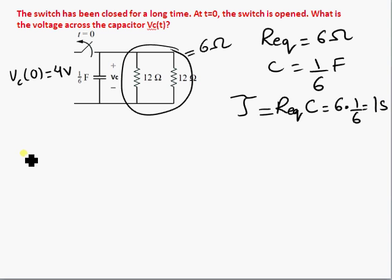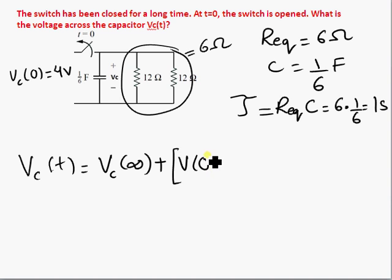Now using the voltage across the capacitor expression, we have the voltage of the capacitor at time equals infinity plus the difference between what is at zero, capacitor at zero minus what the voltage is at infinity, e to the power minus t over tau. In our case, when the switch is open, this is the circuit, and the voltage across the capacitor started out at 4 volts.